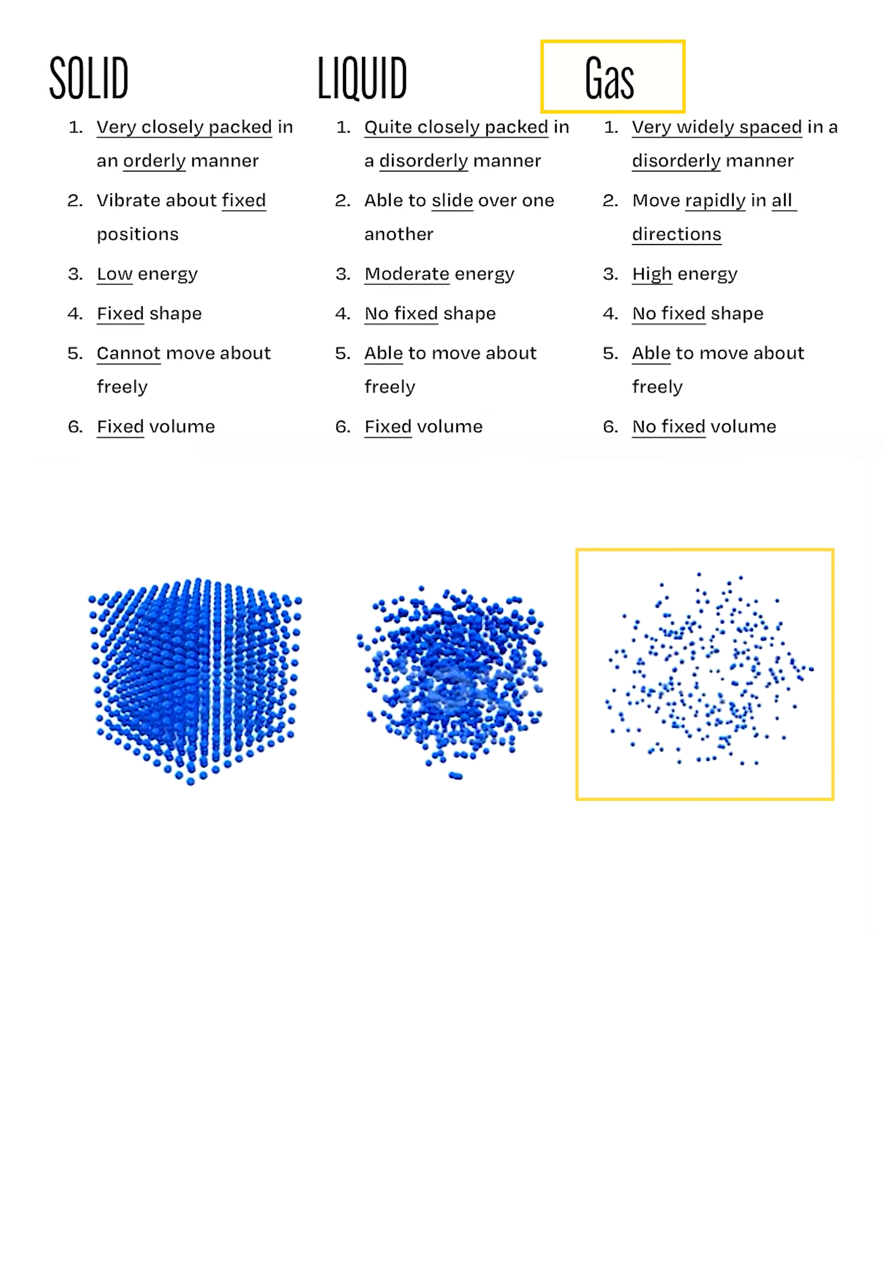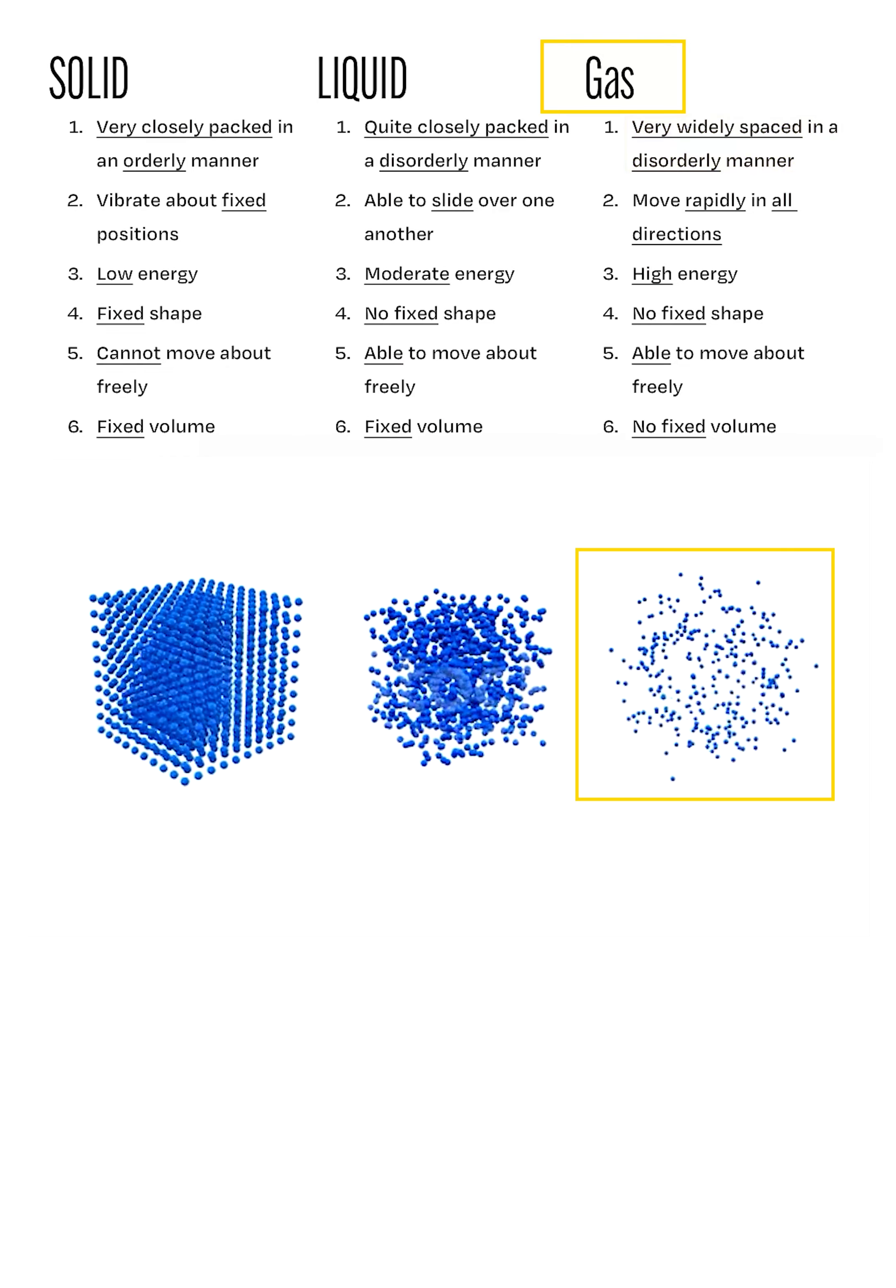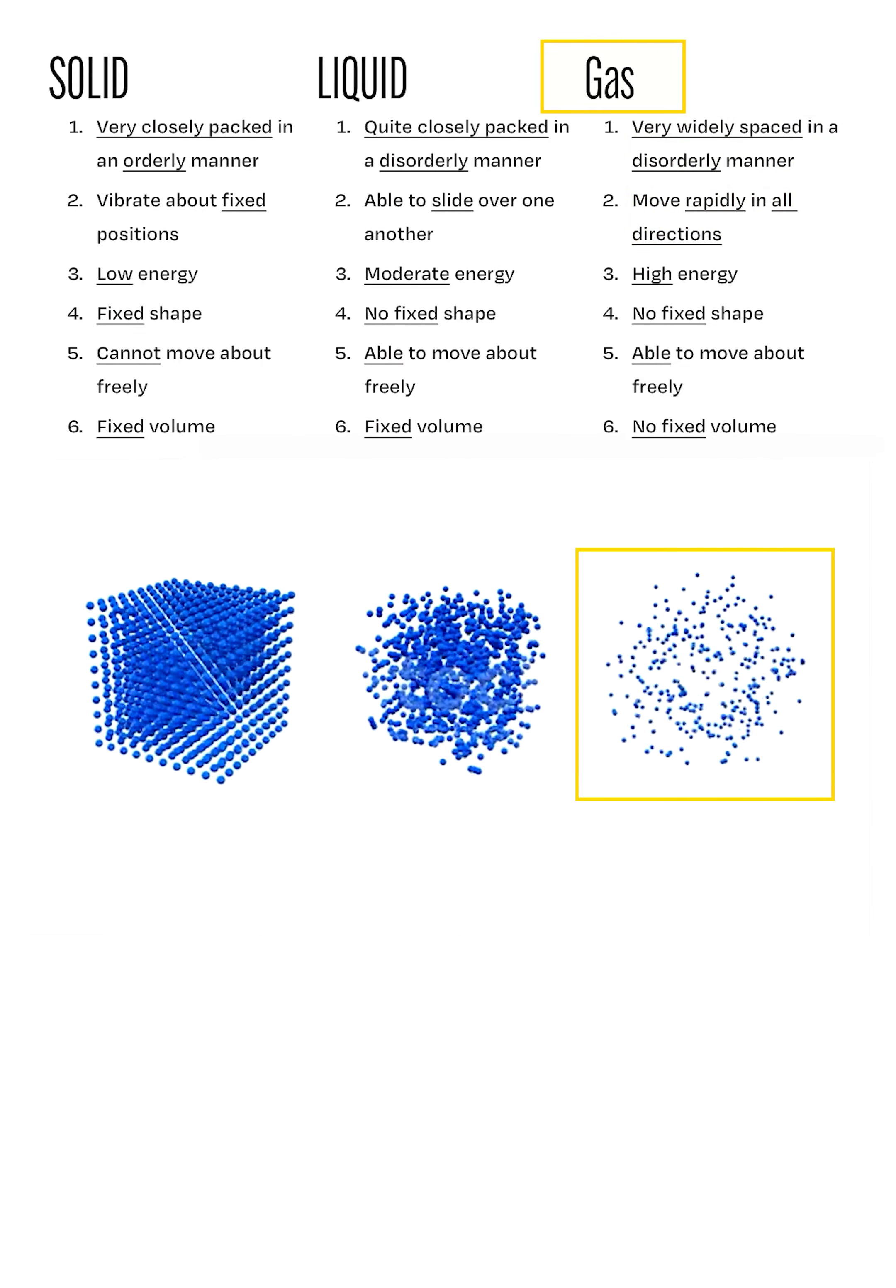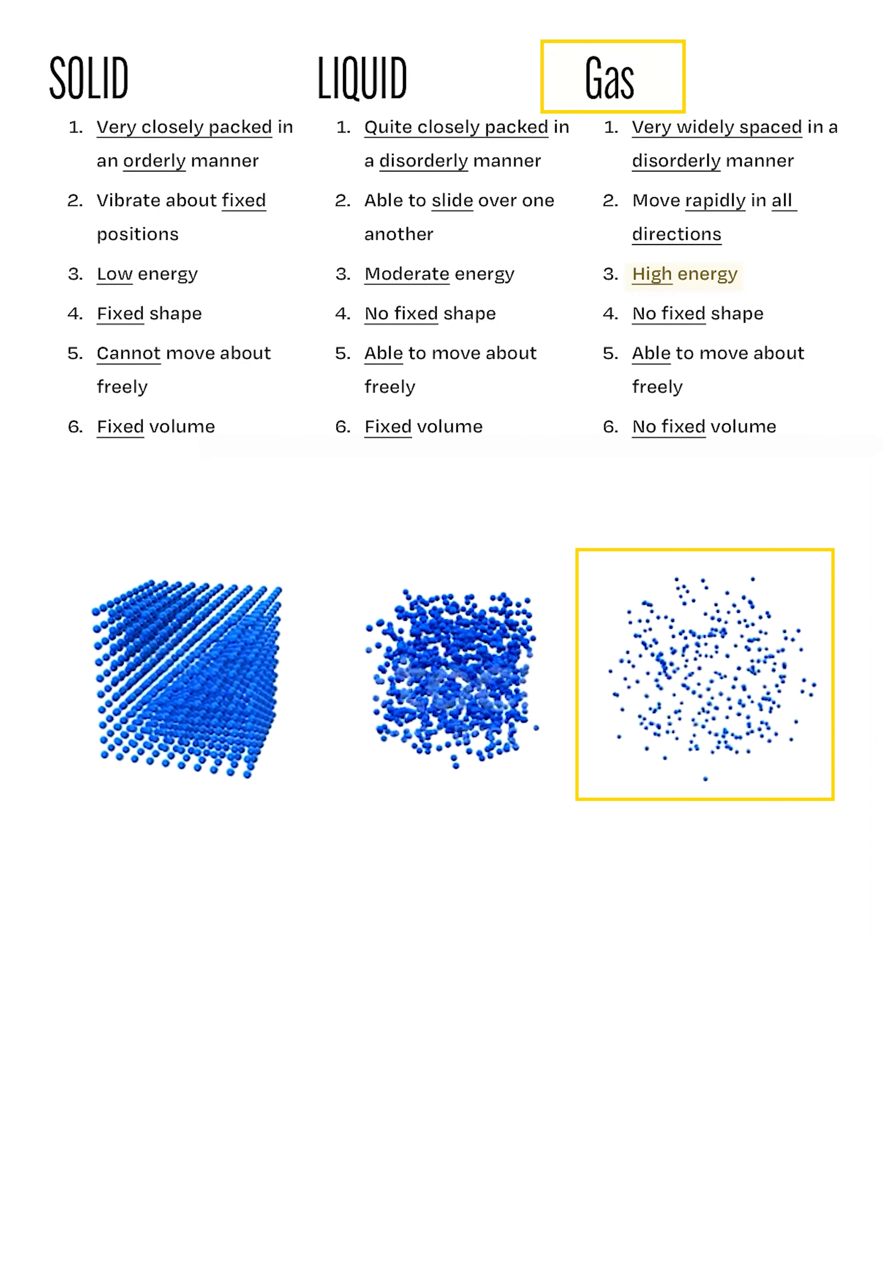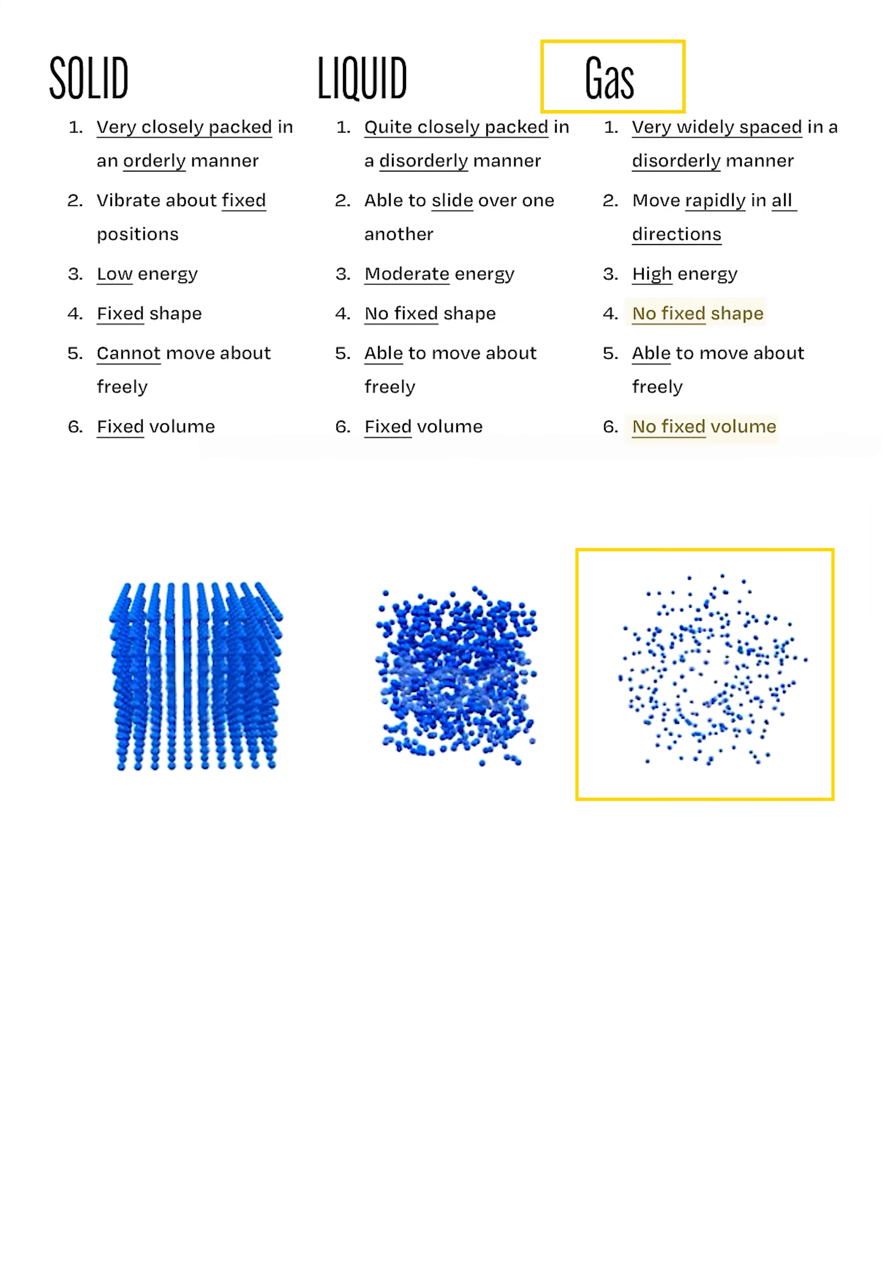Lastly, as a gas, the particles are very widely spaced and arranged in a disorderly manner. These particles move rapidly and freely in all directions. Particles in a gas also have high kinetic energy and there is negligible forces of attraction between them. Thus, because of these properties, gases have no fixed shape and volume.